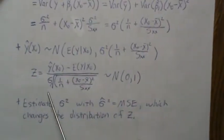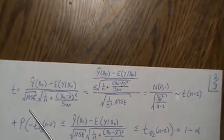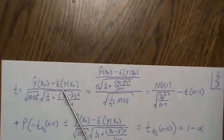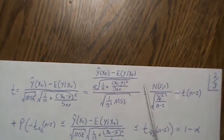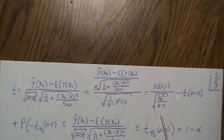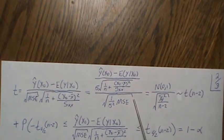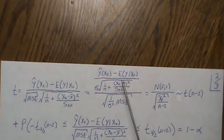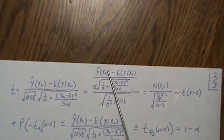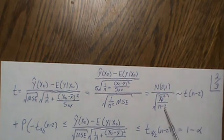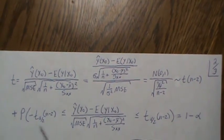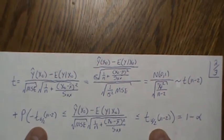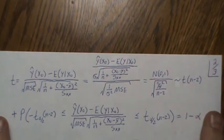Let's rewrite this more carefully. We take this quantity and rewrite the numerator and denominator: the numerator is a standard normal, and the denominator ends up being a chi-squared divided by its degrees of freedom, under the square root sign. In a previous video, we showed that the least squares estimates for the betas are independent of MSE. So the numerator and denominator are independent, and it is in fact a t distribution. We can now write the probability of this quantity being between the quantiles of a t distribution with n minus two degrees of freedom and tail probability alpha over two, so that the overall probability is one minus alpha.